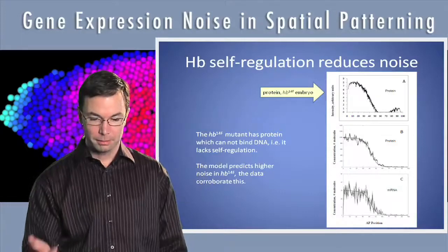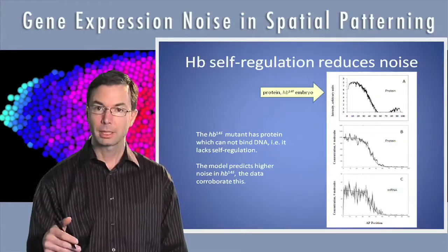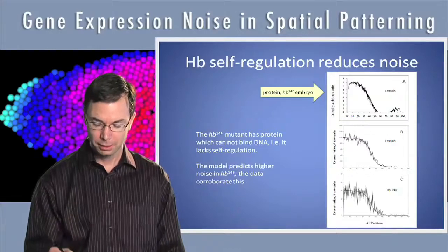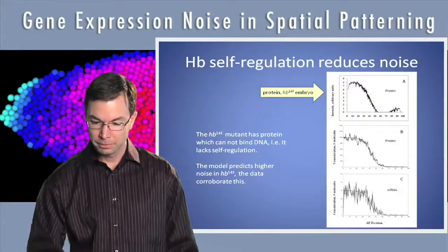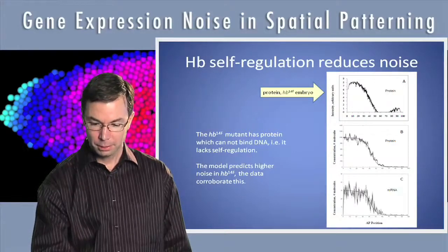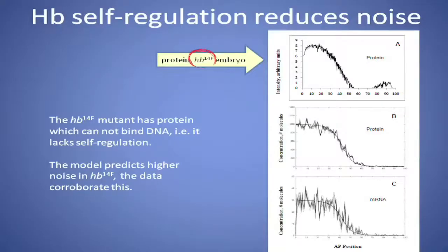We can also look at the effect that those hunchback self-regulatory sites — that self-regulatory feedback cycle — has on noise expression. If you look at an actual embryo with a mutant, this hunchback 14F, which does not bind DNA — the protein it produces does not have a DNA binding sequence and so there's no self-regulation in this mutant — then we do see that the protein becomes noisier than wild type. And if we look at the simulations, both RNA and protein are much noisier without these self-regulation sites in them.